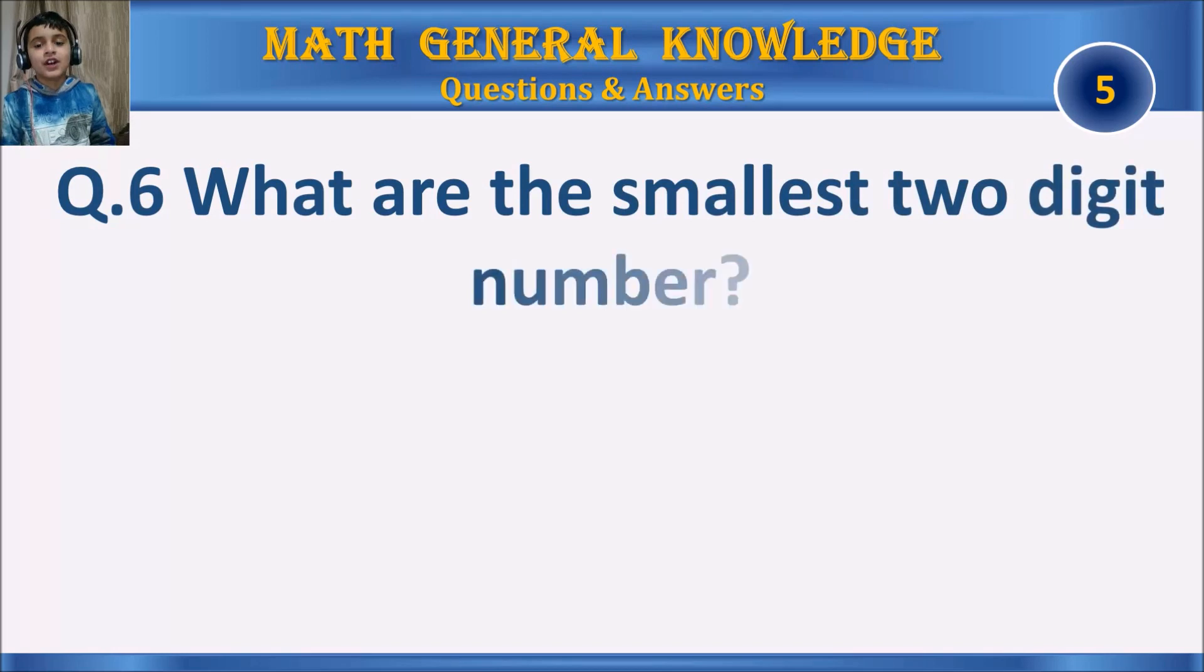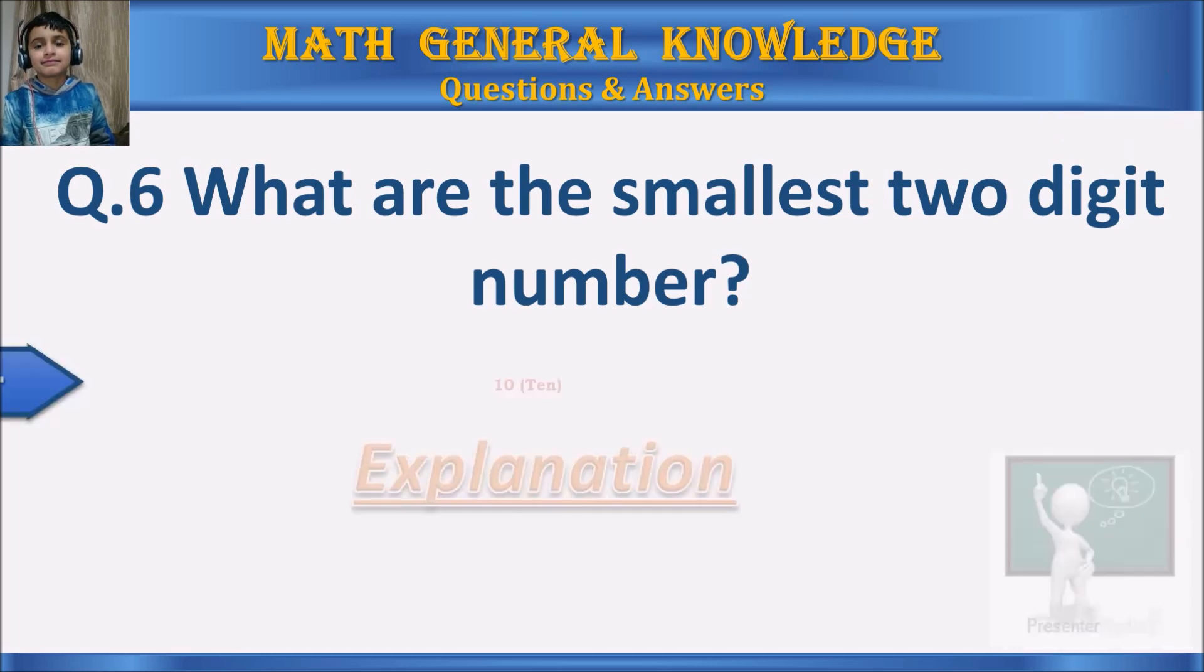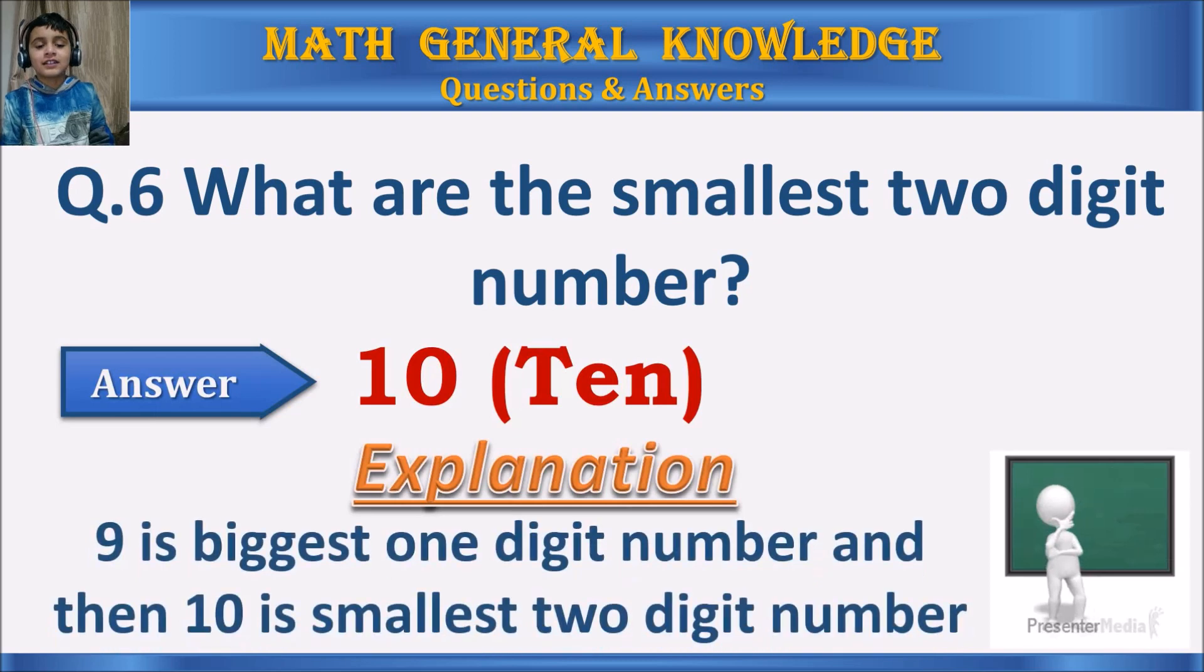Question 6: What are the smallest two-digit number? Your time starts. The answer is 10. Nine is the biggest one-digit number, and then 10 is the smallest two-digit number.